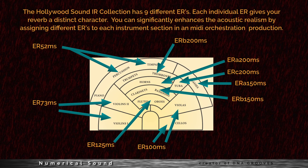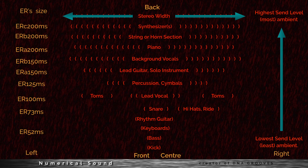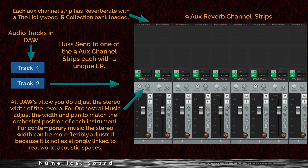The Hollywood Sound IR Collection has nine different early reflections. Each individual early reflection gives your reverb a distinct character. You can significantly enhance the acoustic realism by assigning different early reflections to each instrument section in a MIDI orchestration production. In contemporary pop, R&B, or hip-hop productions, you can assign different size early reflections to achieve a 3D depth in the stereo field — assign smaller size early reflections for the foreground and larger ones for the middle to background.